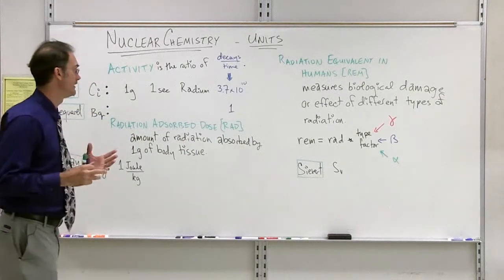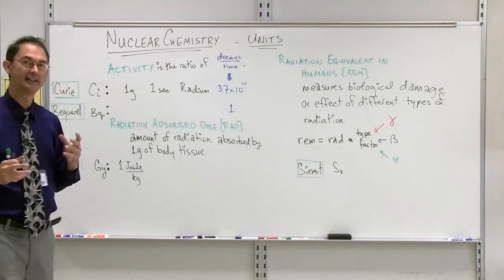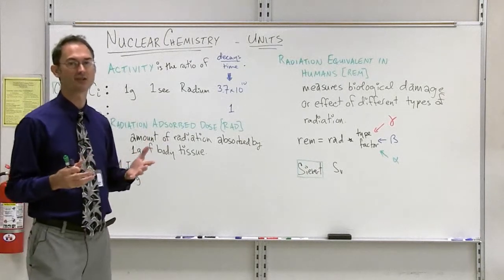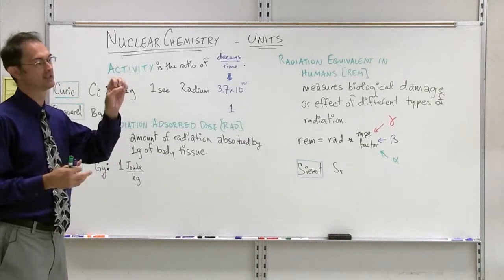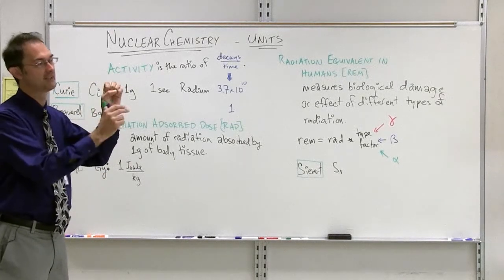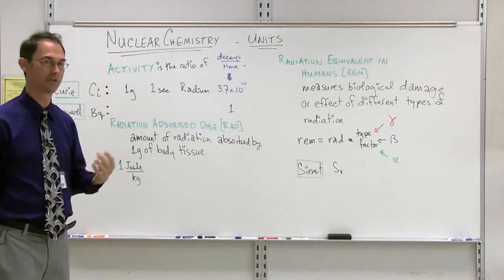First of all, we have activity, which is simply the ratio of decays per time. It's a very factual way of going about nuclear chemistry. It simply is, how many times are there decays? How many times do particles come off the nucleus?